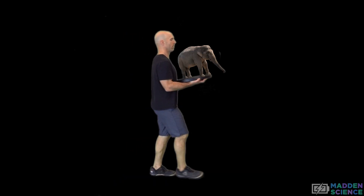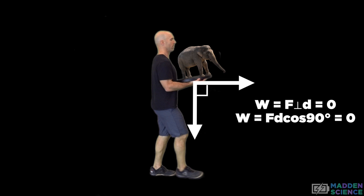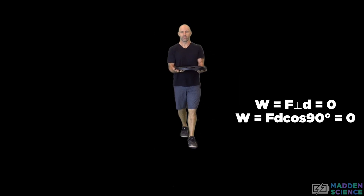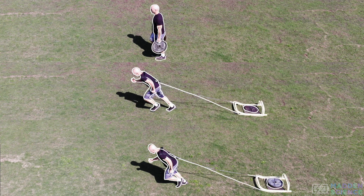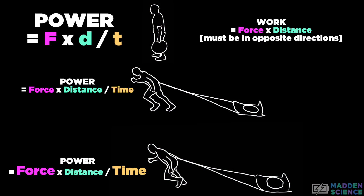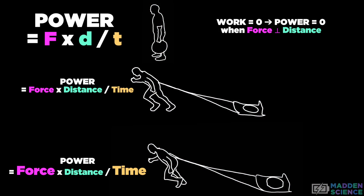Say instead of just carrying the weights, I carried an elephant. Because the elephant's weight acts downward, and my walking distance is perpendicular to that direction, I would do no work, and therefore have no power. On the sled pulls, say you double the force and double the time — the power required would remain the same.